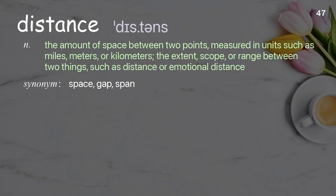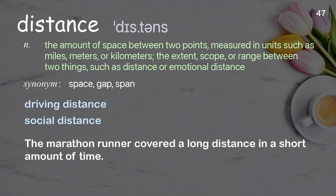Distance: The amount of space between two points, measured in units such as miles, meters, or kilometers; the extent, scope, or range between two things, such as physical or emotional distance. Examples: driving distance, social distance. The marathon runner covered a long distance in a short amount of time.